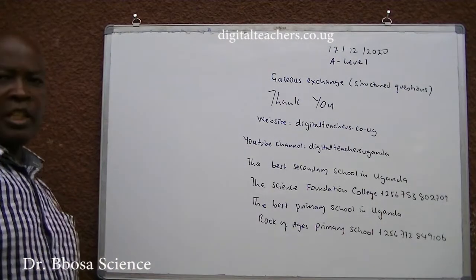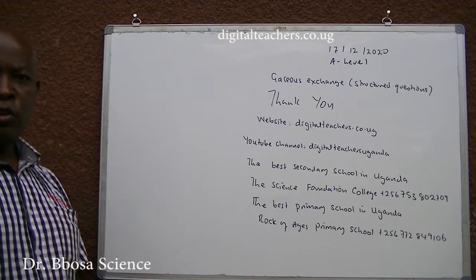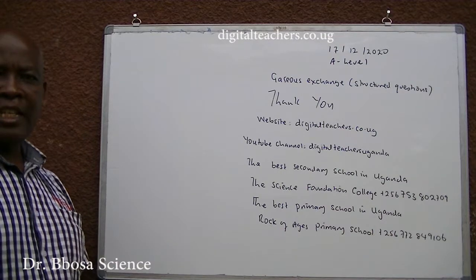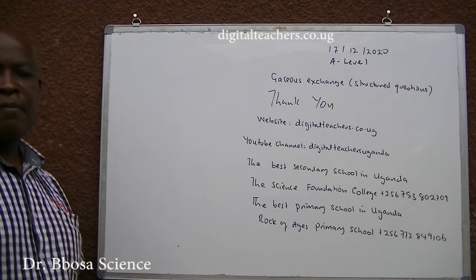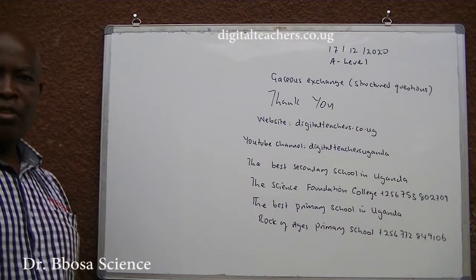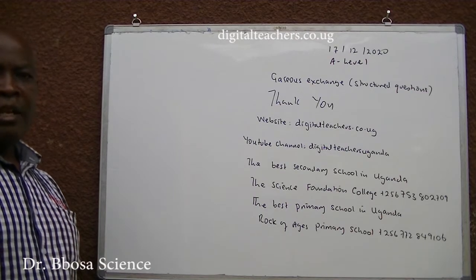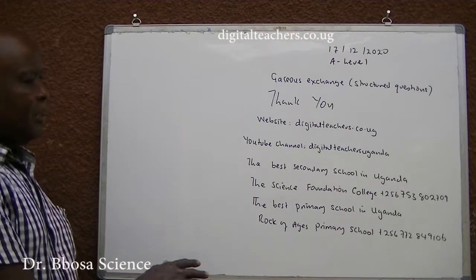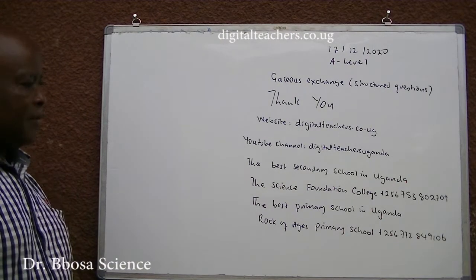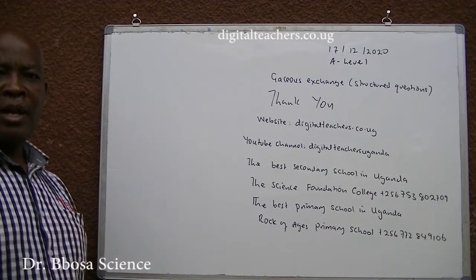Thank you so much for listening to this video. Our website is digitalteachers.co.ug — here find notes, exams and their marking guides for physics, chemistry, biology and math. Also visit our YouTube channel for related videos in physics, chemistry, biology, math and primary subjects. The best secondary school in Uganda is the Science Foundation College. The best primary school in Uganda is Lock of Ages Primary School.